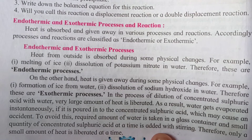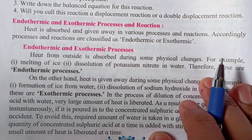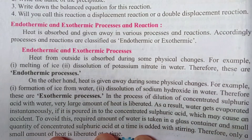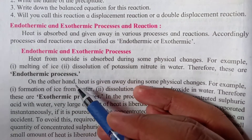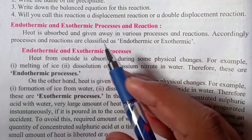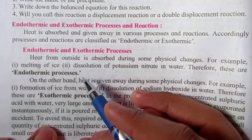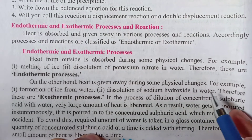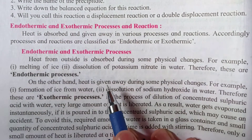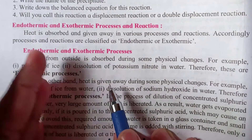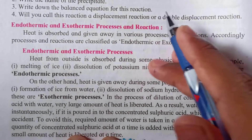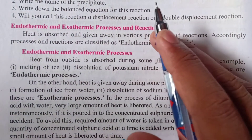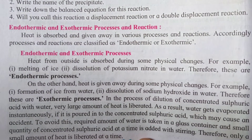Heat from outside is absorbed during some physical changes — for example, melting of ice and dissolution of potassium nitrate in water. These are endothermic processes, as heat is absorbed from the surroundings. On the other hand, heat is given away during some physical changes, for example, formation of ice from water. When water converts to ice, heat is liberated from the water, so this is known as an exothermic process.